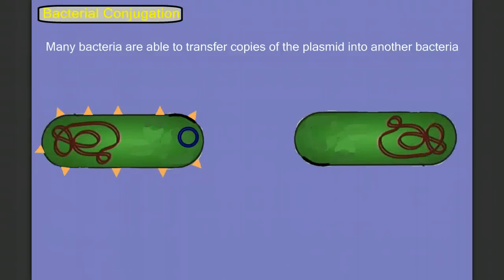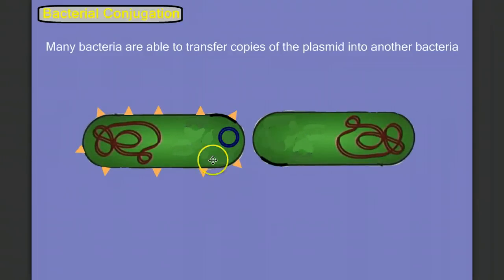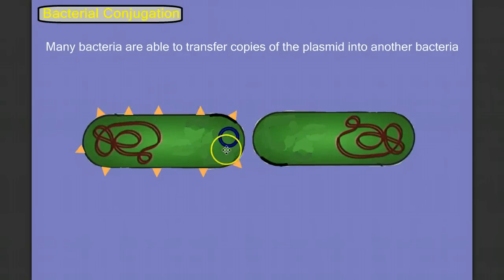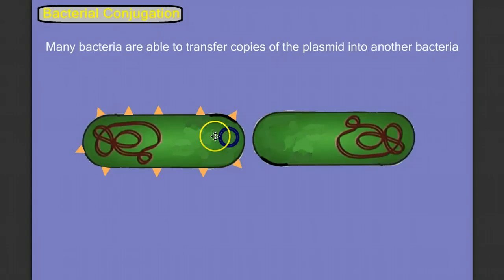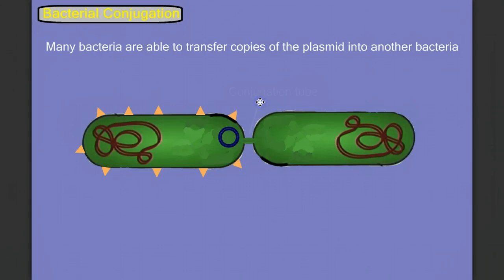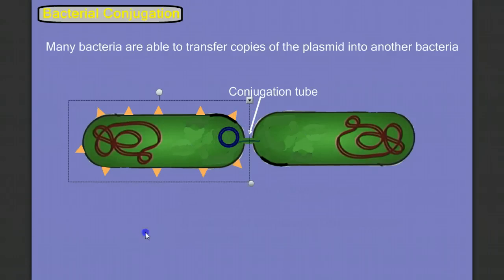Sometimes a bacteria cell with a plasmid will transfer a copy of that plasmid to another bacteria. Here we have two bacteria: one with the plasmid and one without. The one that has the plasmid has some characteristics — in this case proteins on the surface — that are being conferred by this plasmid. It's almost like we have two different versions of the bacteria. When they come together, they'll form what's called a conjugation tube, and through that tube, we're going to exchange — basically like downloading a file — part of this plasmid information.